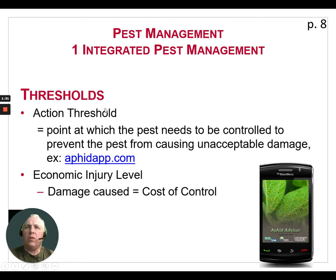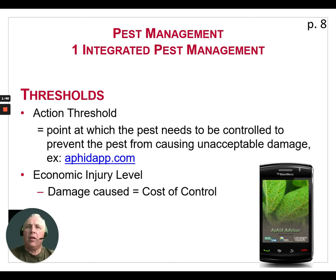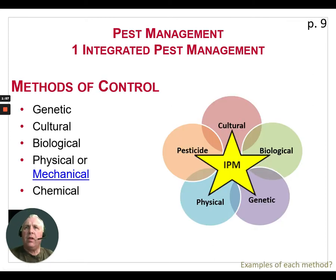An action threshold is a point at which the pest needs to be controlled to prevent the pest from causing unacceptable damage to the crop. One method of calculating that is by using the aphid app, so it's important to know the numbers you have — are they increasing, decreasing, or stable? We also need to think about the cost of control: it's the economic injury level minus the damage that's caused, and we need to take that into consideration when looking at controlling a pest.